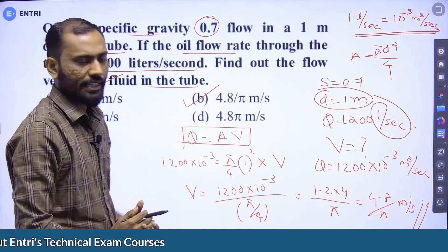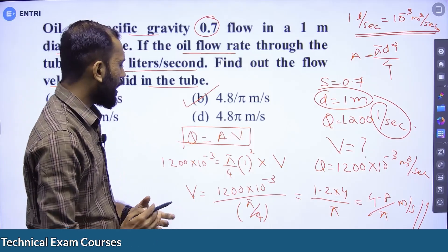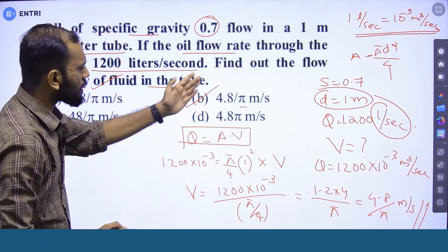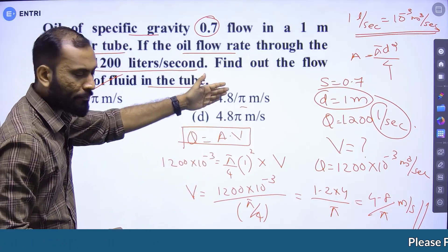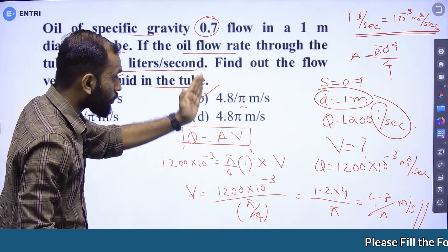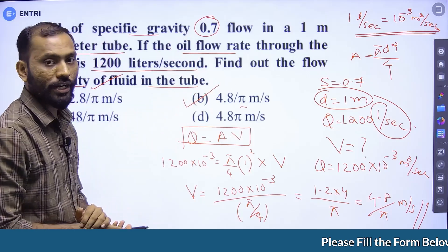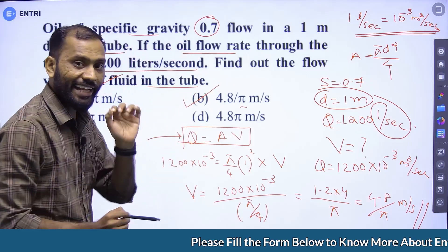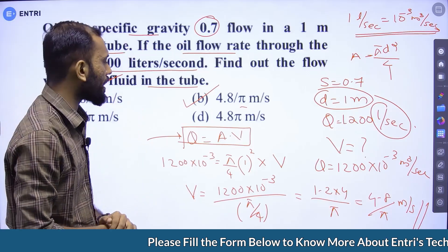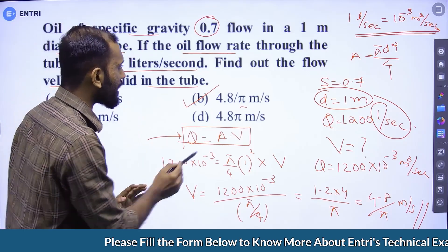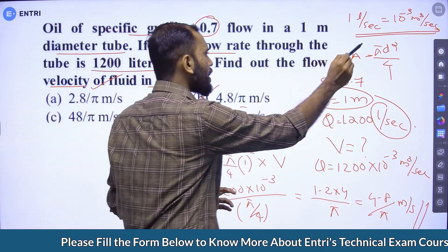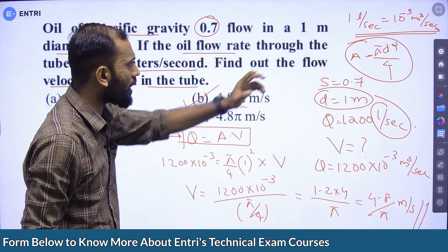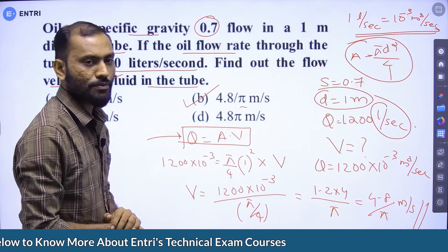Clear. In terms of pi, we have options 4.8 by pi and 4.8 into pi. Discharge equals area into velocity — that is the expression used. Area in terms of diameter uses pi d-squared by 4, just substitute.